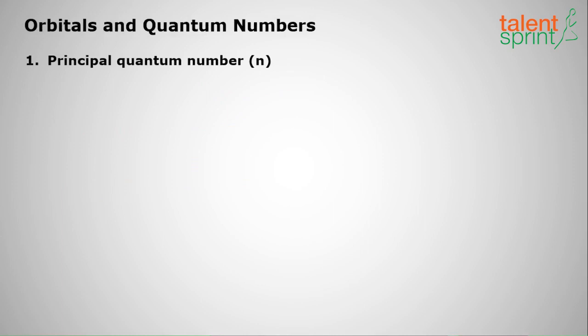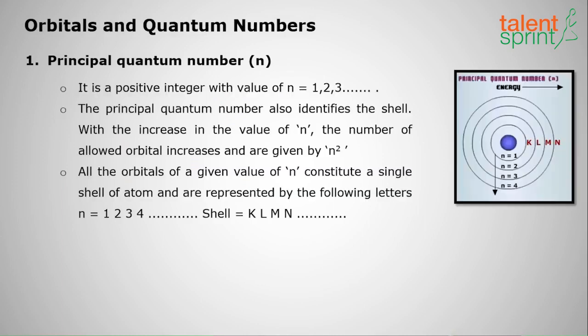The first one is the principal quantum number, called n. The first orbital is named n equal to one, and the second orbital is n equal to two. In older notation, orbitals were named K, L, M, N — where K means the first orbital, L means the second orbital, and M means the third orbital. The principal quantum number always identifies the shell.